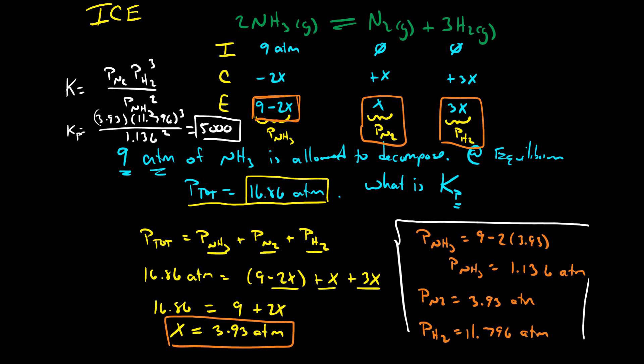So the two ways we've seen to use ICE tables are: when you're told initial concentrations and given some information about equilibrium, from which you can solve for X and then calculate the equilibrium constant. If you know initial concentrations and at least something about equilibrium, you'll be able to solve for X, and once you know X, you can solve for the equilibrium constant. In the next video, we'll see the last example of how to use ICE tables — when you don't know information about equilibrium, but you do know the equilibrium constant.